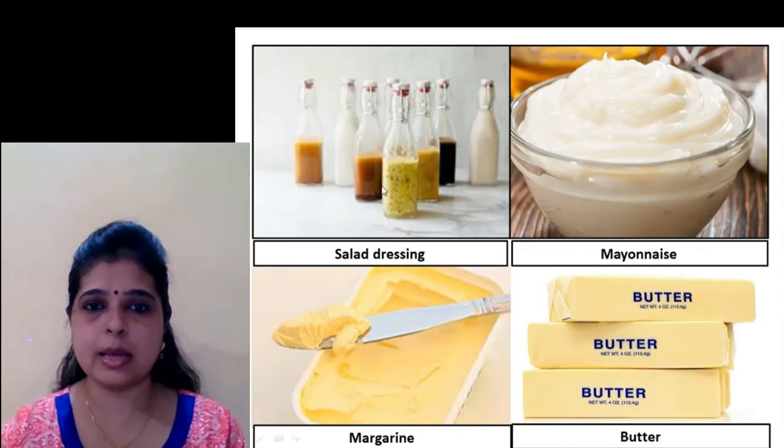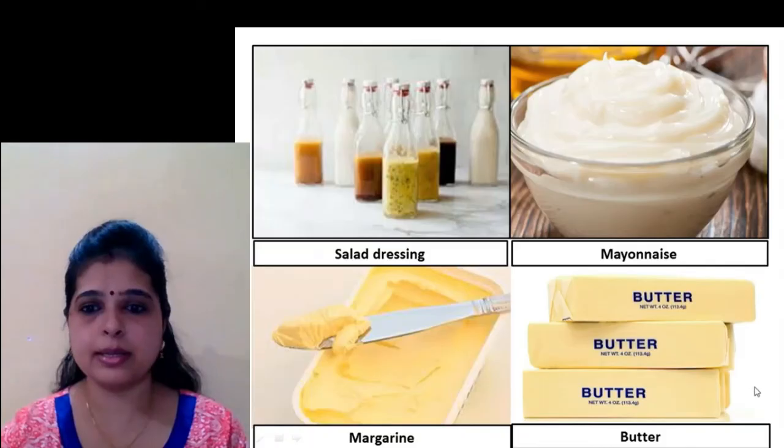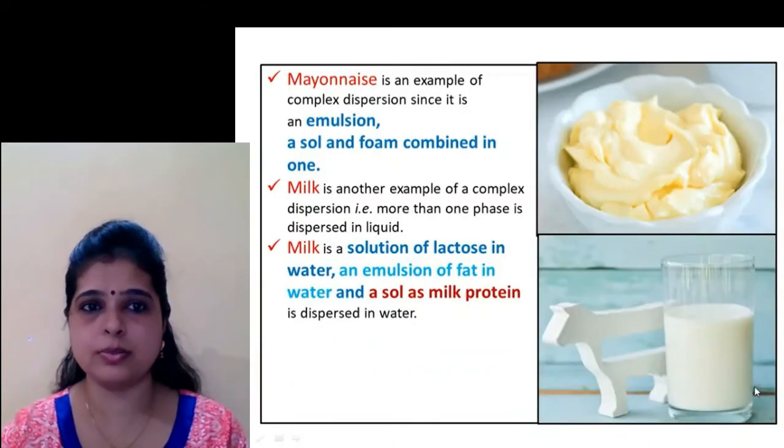This is the figure showing the simple emulsion types — oil in water and water in oil. Examples include salad dressing, mayonnaise, margarine, and butter.